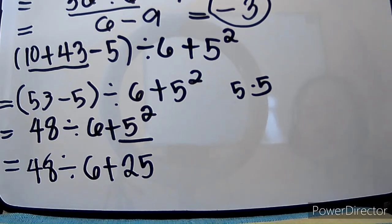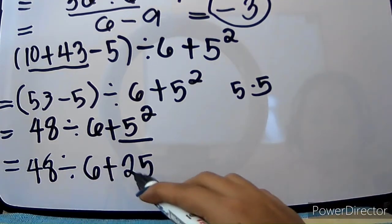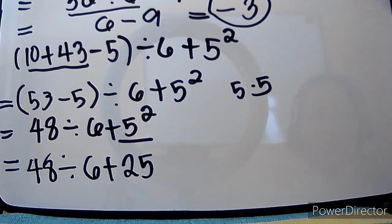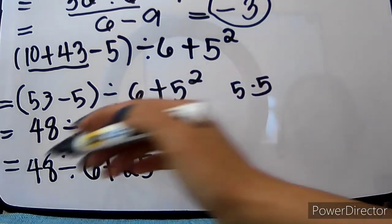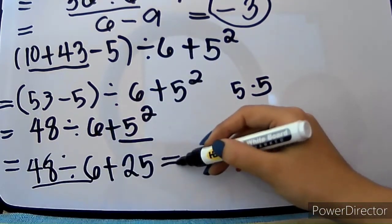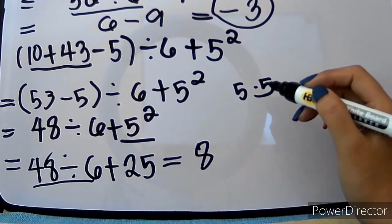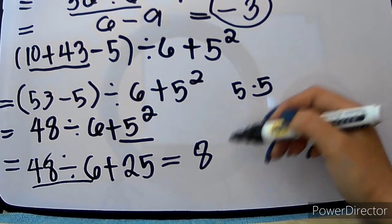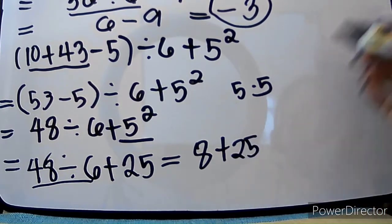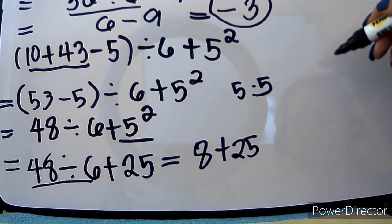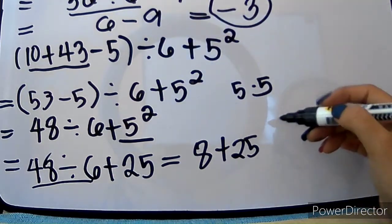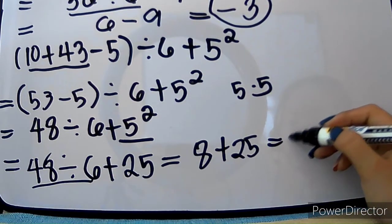And we're done with E. Check natin kung meron tayong multiplication or division. Meron tayong division and addition — yung D at saka yung A comparing, mas mataas or mas mauuna dapat gawin si division. So, 48 divided by 6 will give us 8. And then plus 25. Since that is the last operation, tapos na tayo sa letter D. Mag-add na tayo — kanina kasi subtraction. So, we have 33. This is our final answer.